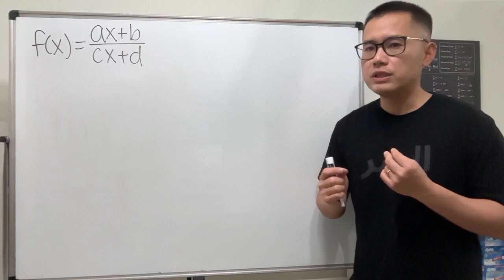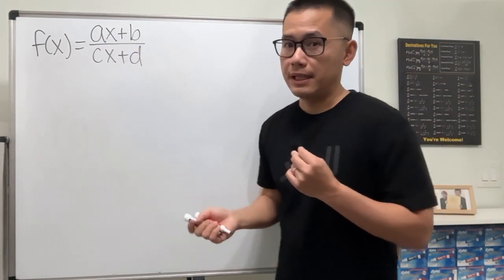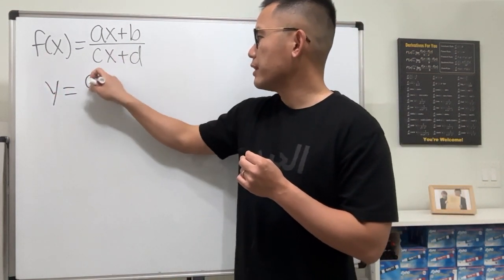So we are going to find the inverse for the general form, which is ax plus b over cx plus d. First, we want to write f of x as y, and this side right here stays.